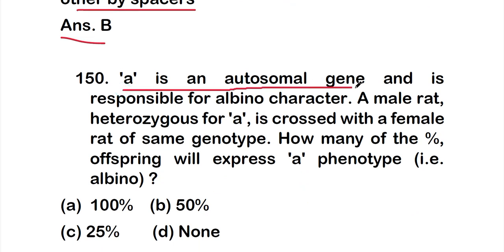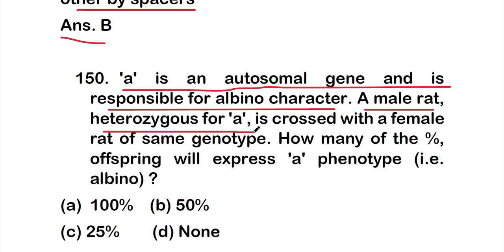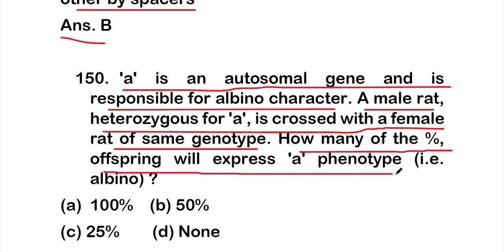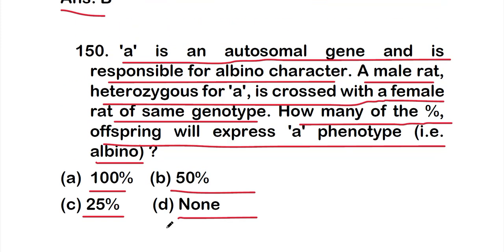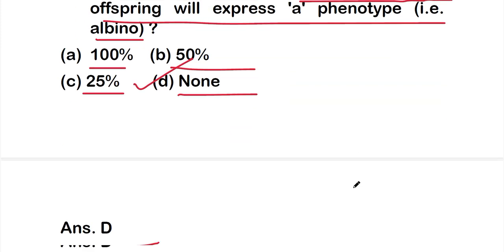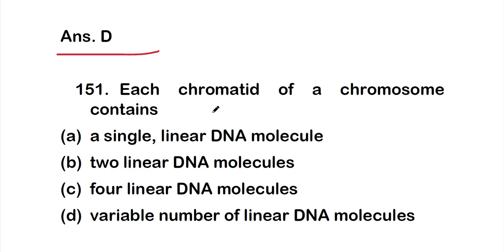Question 150: Gene 'a' is an autosomal gene responsible for the albino character. A male rat heterozygous for 'a' is crossed with a female rat of the same genotype. What percentage of offspring will express the 'aa' phenotype (albino)? Options: A — 100%; B — 50%; C — 25%; D — none. The correct answer is option D — none, meaning 0% will express the albino phenotype.